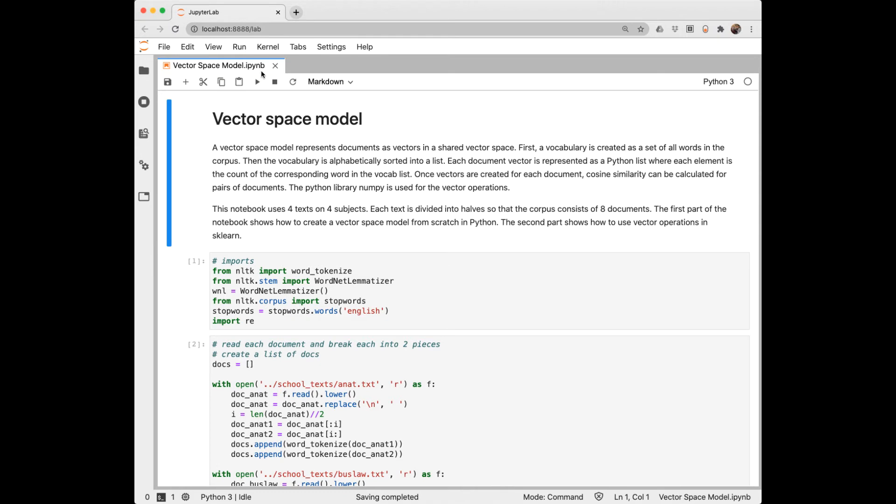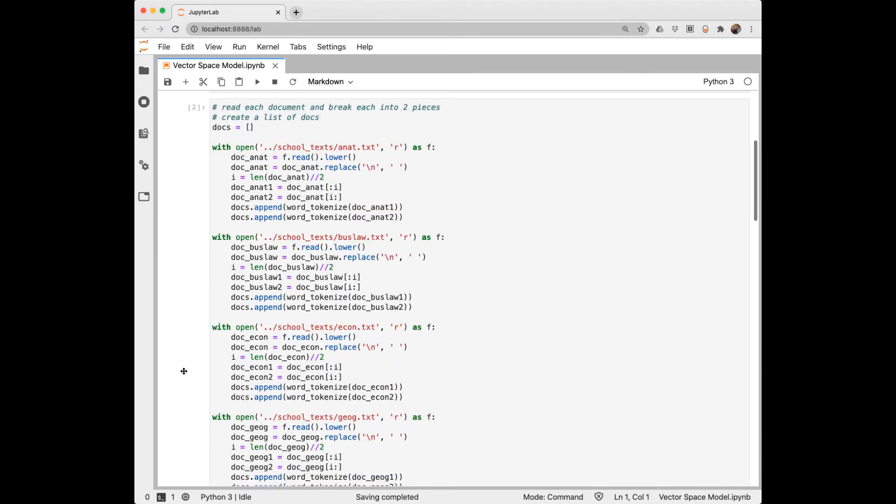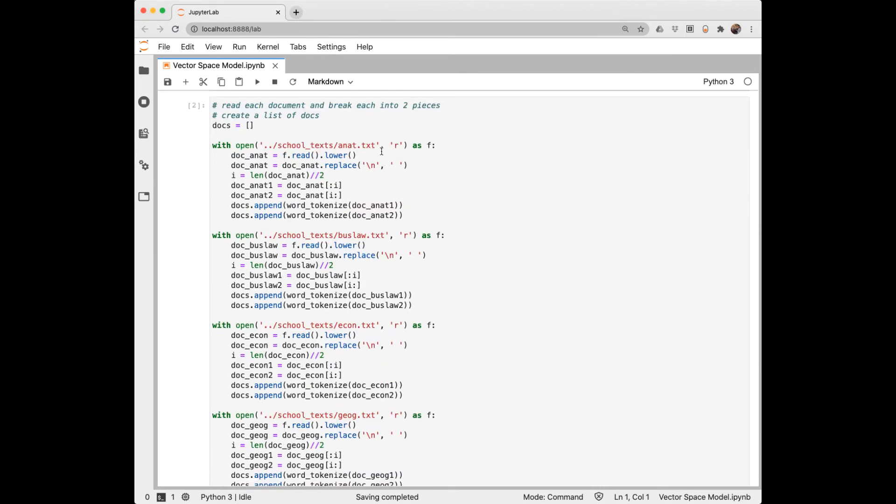This notebook in the GitHub shows how to build a vector space model from scratch. I'm going to do some preprocessing so I've got a lot of imports here. And I'm going to use the same four documents that we looked at in previous videos of plain text documents representing part of a chapter of a college level textbook on anatomy, business law, economics, and geography. I'm dividing each of those documents into two smaller documents. So I'm going to end up with eight documents.